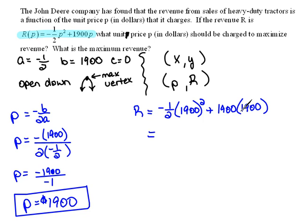And now we can find this, and we can even do this on your calculator. You could take 1900 and square it, multiply by negative 1 half, and add 1900 times 1900. We should end up with 1,805,000 as our maximum revenue.